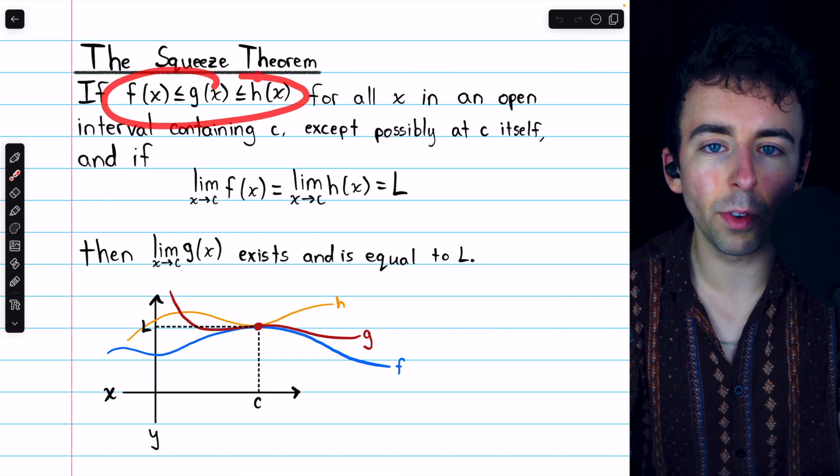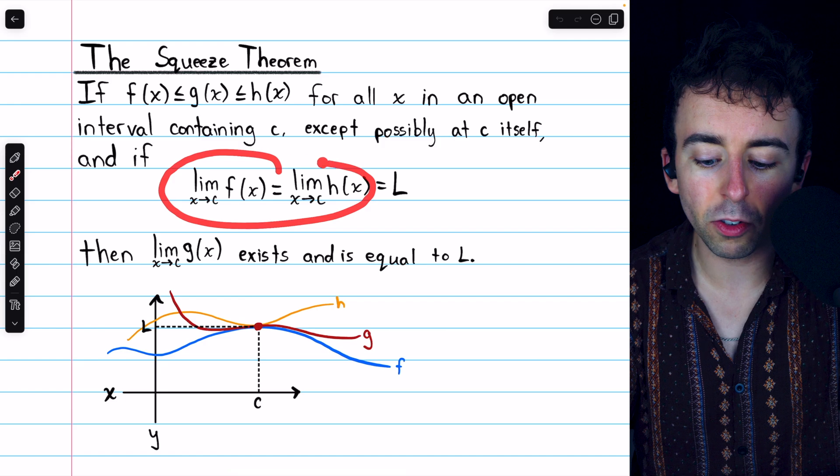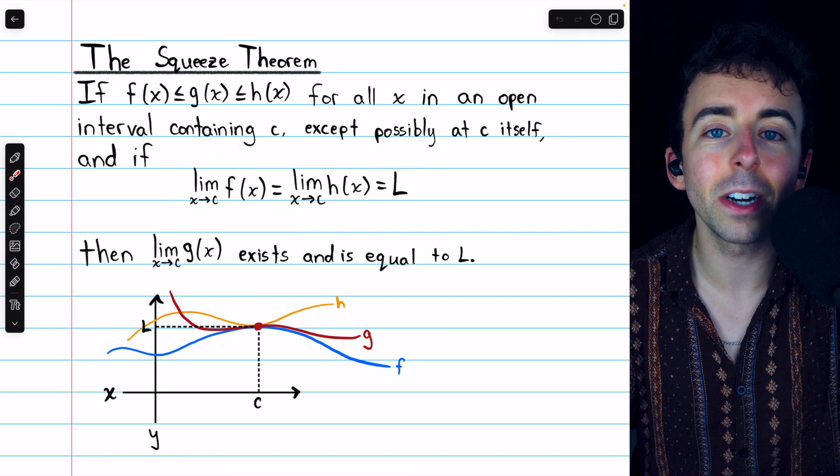So if g(x) is between these functions around c, and the limits of those other two functions f and h, if their limits are the same, say they're equal to some number L.